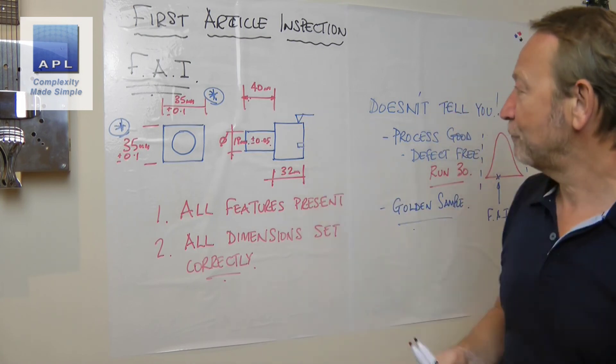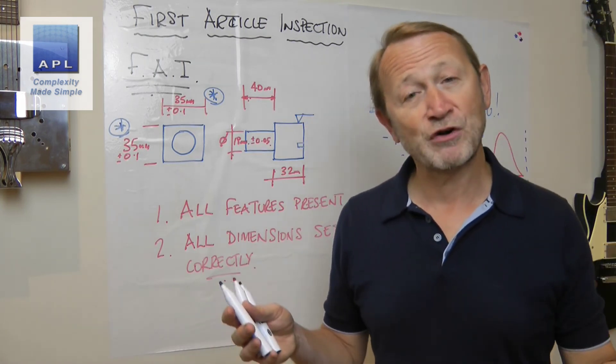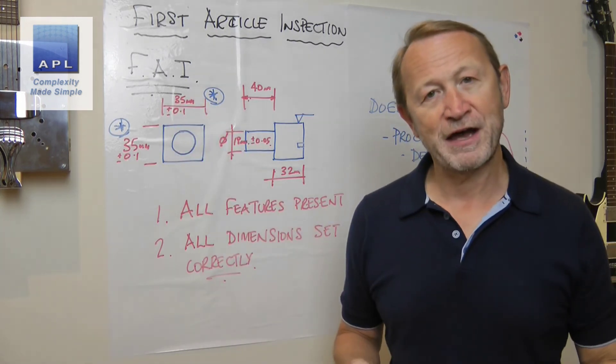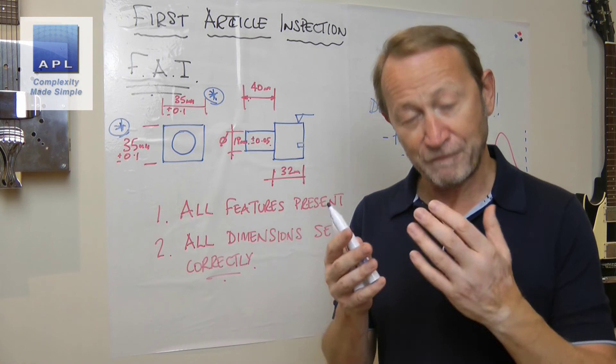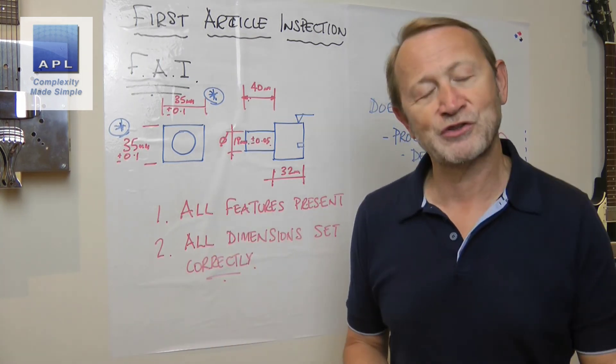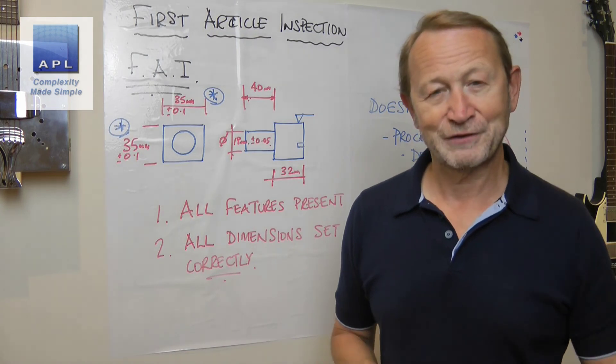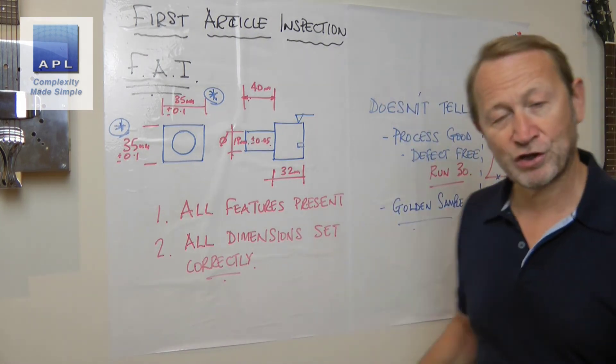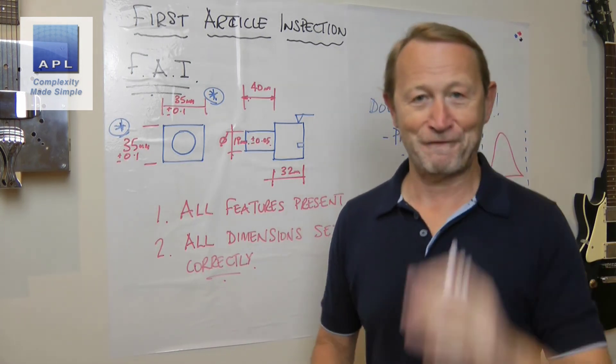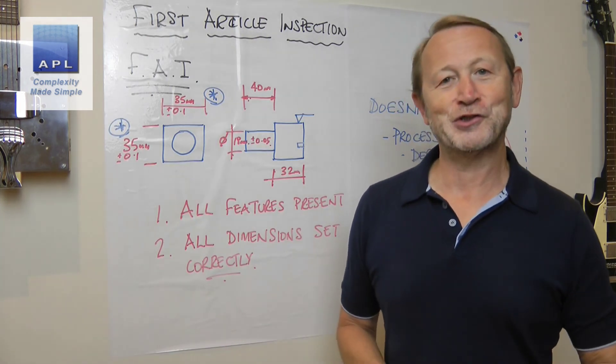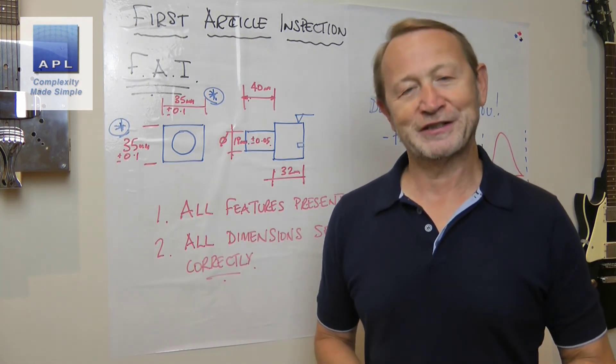There's still lots of work to be done here once you've got the FAIR confirmed. The FAIR just says your program's okay, it's making the item that is on the drawing. Once you've done that, you're done. Use First Article Inspection correctly, go run the extra 30, get your process capability. Then you can find out a lot about whether you're going to make any money on this job or not, or whether you're going to have lots of defects or not, whether you've got work to do before you put the job live.